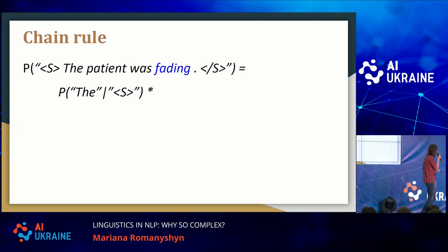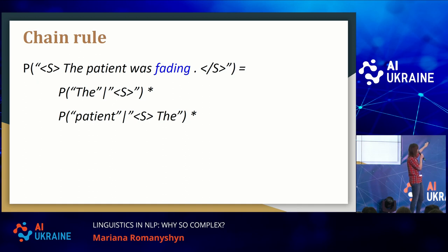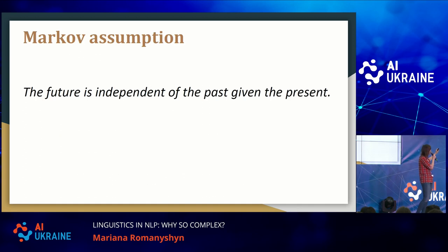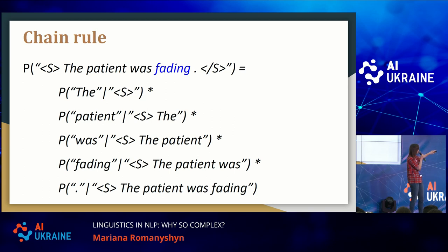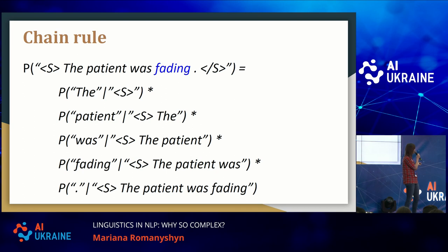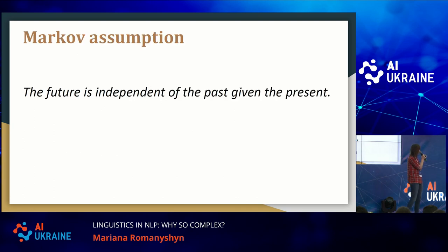There are two types of language modeling: statistical and neural language modeling. The statistical language model works as follows: we need to find the probability of the sentence "The patient was fading." The probability of the sentence is the probability of the word "the" at the beginning of the sentence, multiplied by the probability of "patient" after "the," multiplied by the probability of "was" after "patient," and so on.